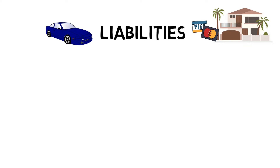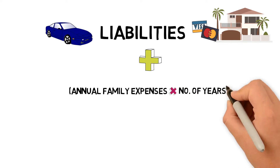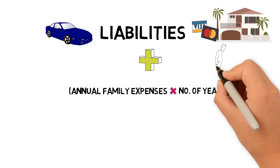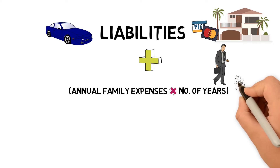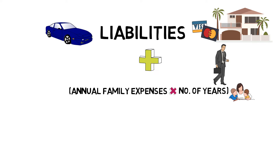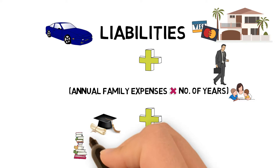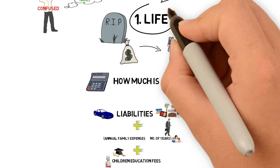You wouldn't want to leave your family filled with debts. Second, add your annual family expenses multiplied by the number of years you wish to take care of your family. Assuming that you are the breadwinner, your family will lose a sum of income when you are gone, but they still need to survive — paying bills, for example. Third, for those with children, this is very important: a sum of ready education fund so that your children's education will not be compromised in your absence. Add all this up and there you have it — your ideal life coverage.